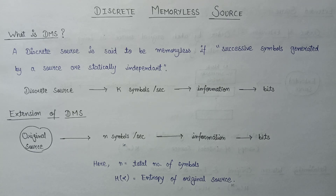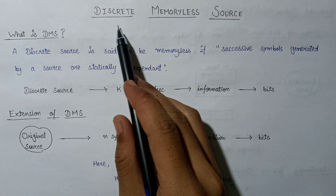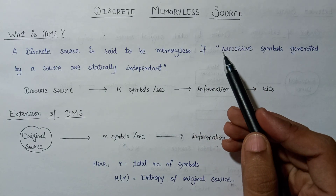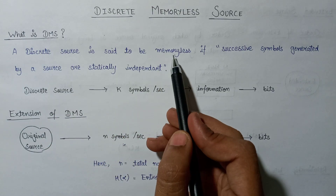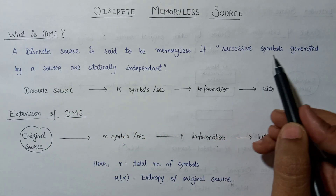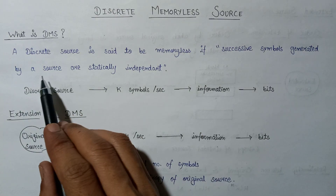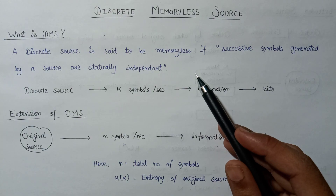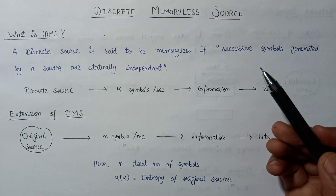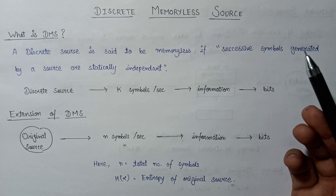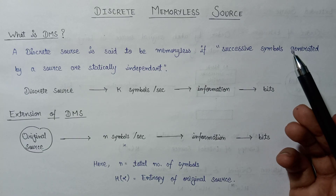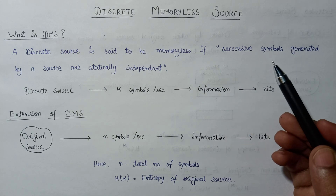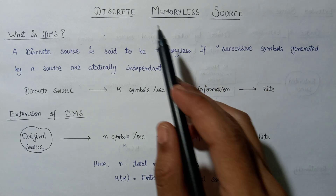In this lecture we are going to study about discrete memory-less sources. A discrete source is said to be memory-less if and only if the successive symbols generated by that source are statistically independent. A discrete source always generates some number of symbols, and if all those symbols are statistically independent, then we can say that the discrete source acts as a memory-less discrete source.